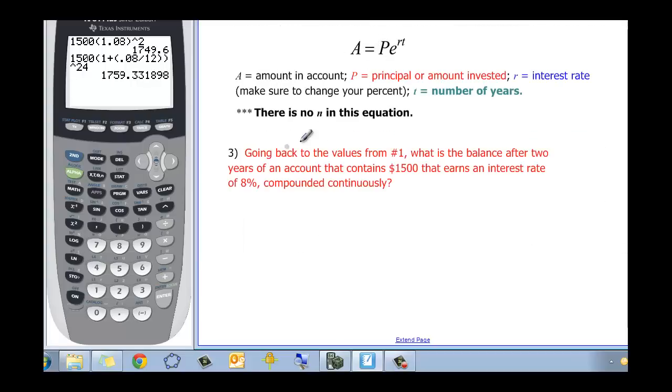Here we have our formula, and it says going back to that same problem, what is the balance after 2 years? So that's our T, after 2 years. And $1,500 is our principal, and it's compounded at 8%, that's our rate. The compounded continuously is going to give us E. So A is equal to our 1,500 times E and then to the R which is .08 times T which is 2 years.